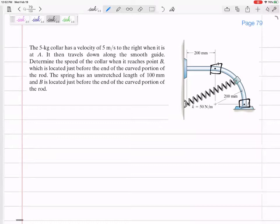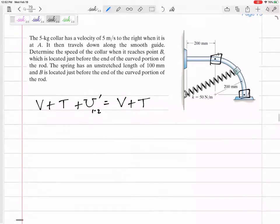So let's organize our thoughts with conservation of energy. Potential plus kinetic plus any non-conserved work – this isn't gravity and springs, that's just work like due to a force – equals the final V plus T. And so maybe we could say this is at A, this is at B right here.